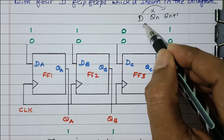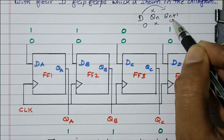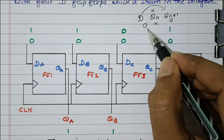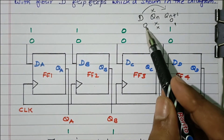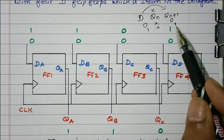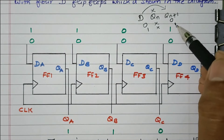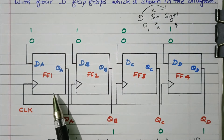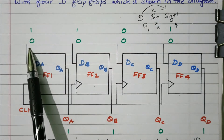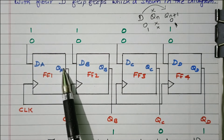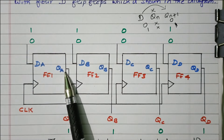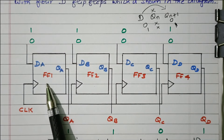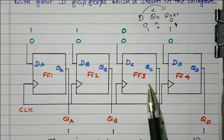For D equal to 0, whatever may be the present state, the next state is also 0. For D equal to 1, whatever may be the present state, the next state will be 1. D=0 means next state will be 0; D=1 means next state will be 1, whatever may be the present state. That is the advantage of using D flip-flops in the digital register — the input will be reflected at the output at the next state. That is why we use D flip-flops to construct shift registers.